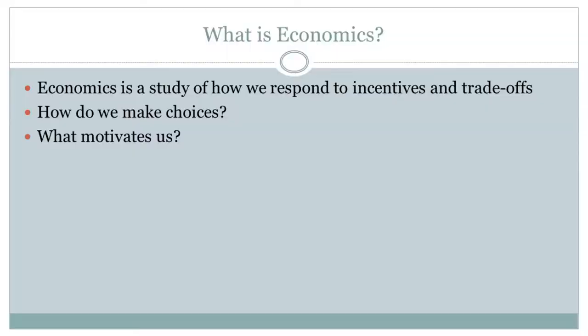What economics is about is understanding the world and how people operate, through a particular lens. If I had to give a definition, I'd say economics is largely about how we respond to incentives and trade-offs and understanding how we make choices. An anthropologist looks at culture, a sociologist looks at society, a geographer looks at the layout of the land, and an economist looks at incentives.